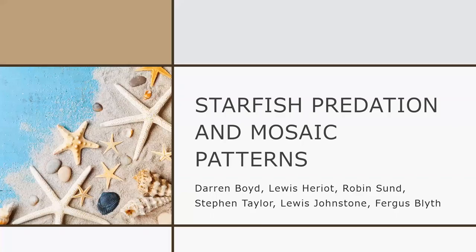This study investigated how the predation of sea urchins by starfish can affect patterns of marine algae and create different patchworks of habitat in an ecosystem. It was authored by David Duggins from the University of Washington and published in the journal Ecology by the Ecological Society of America in 1983.